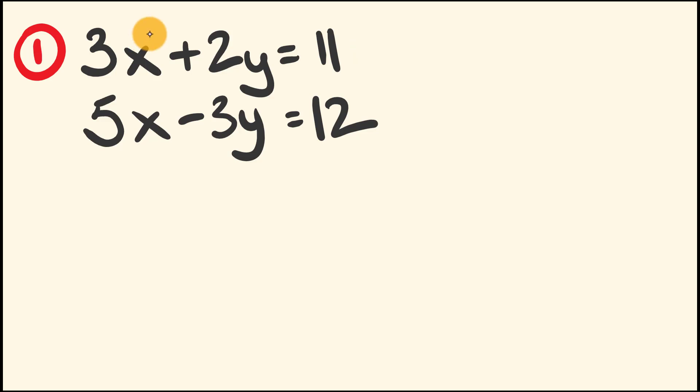The first one here, we have 3x plus 2y equals 11. And the second equation, we have 5x minus 3y is equal to 12. And what we're going to try and do is solve for x and for y.